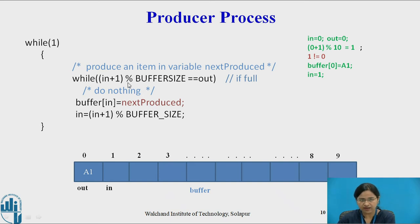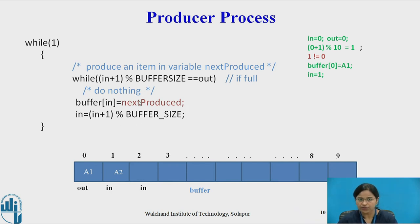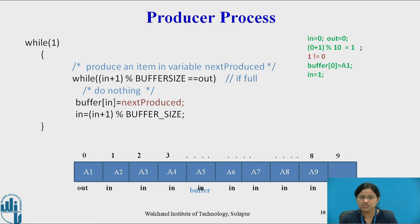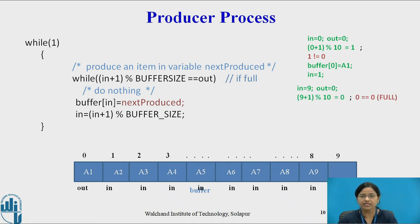Once 'in' is incremented, the while loop is checked again: (1 + 1) mod 10 = 2, which is not equal to 0, so the next item is produced. This continues until 'in' reaches position 9 and 'out' is still 0. Then (9 + 1) mod 10 = 0, and 0 equals 0 — the condition is true, meaning the buffer is full. In this full condition, the producer process must wait because there is no space in the buffer.